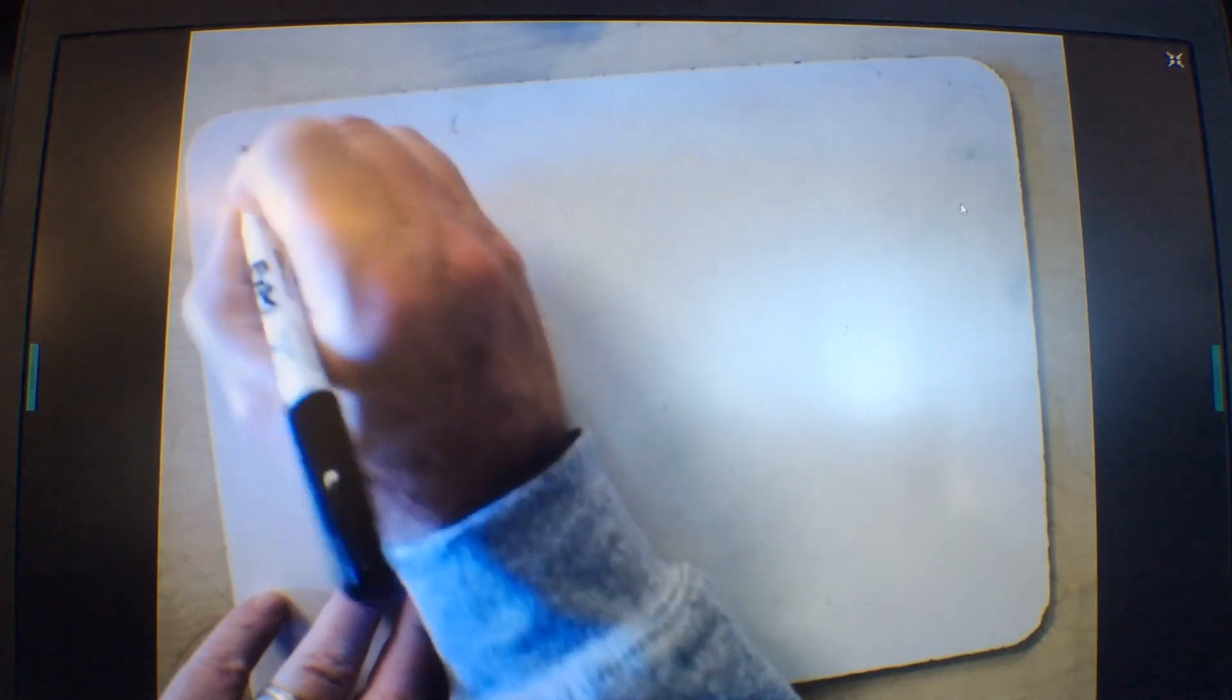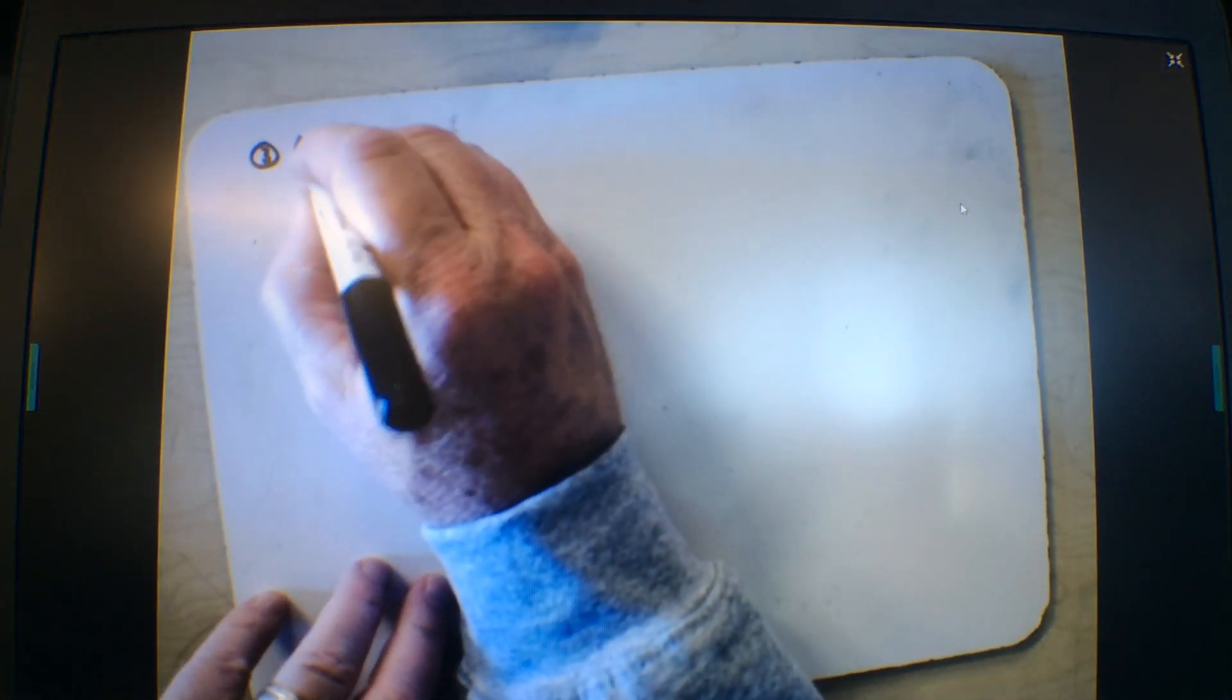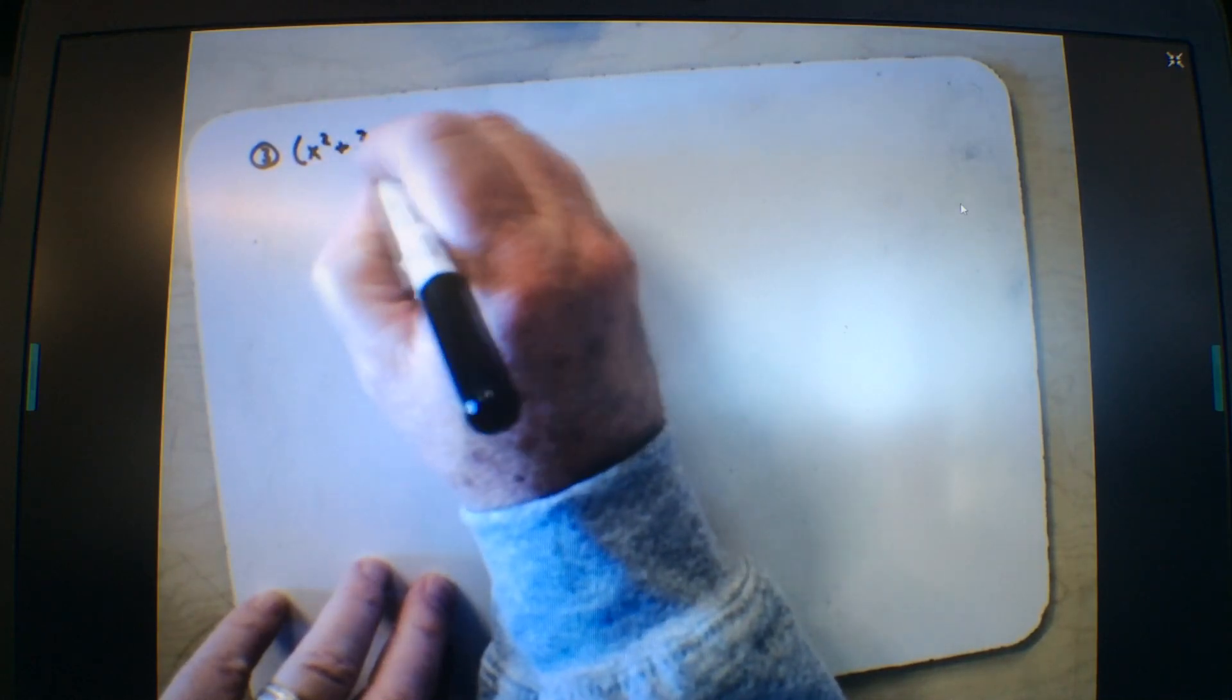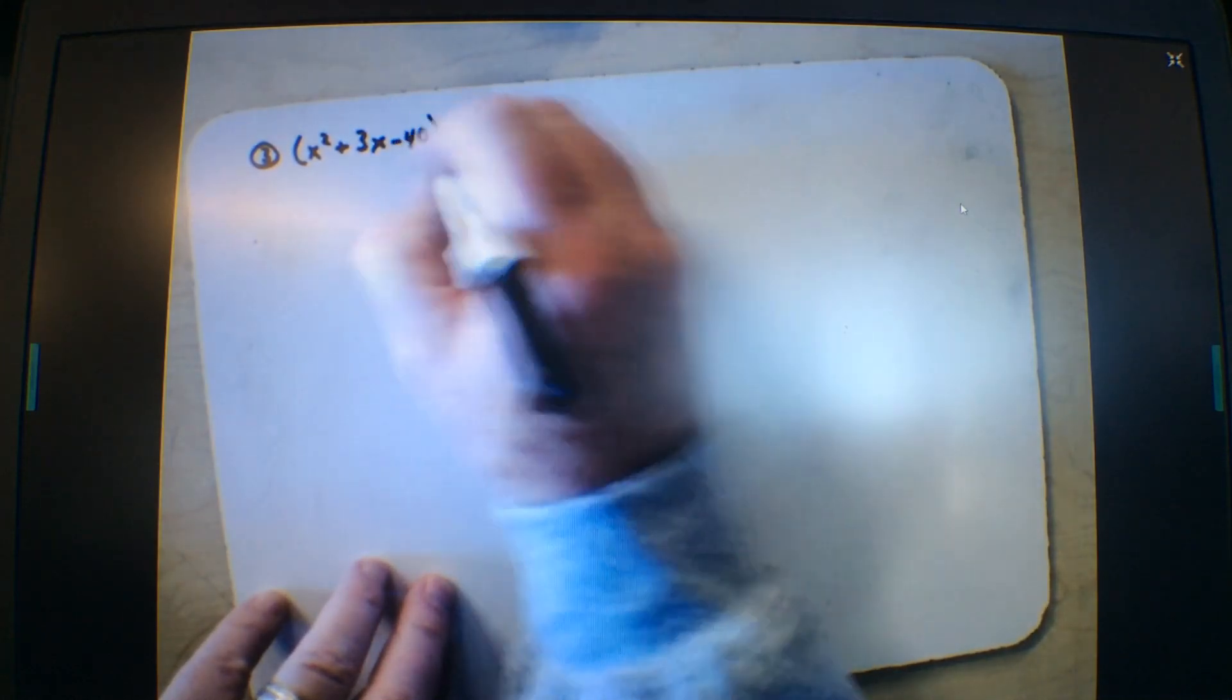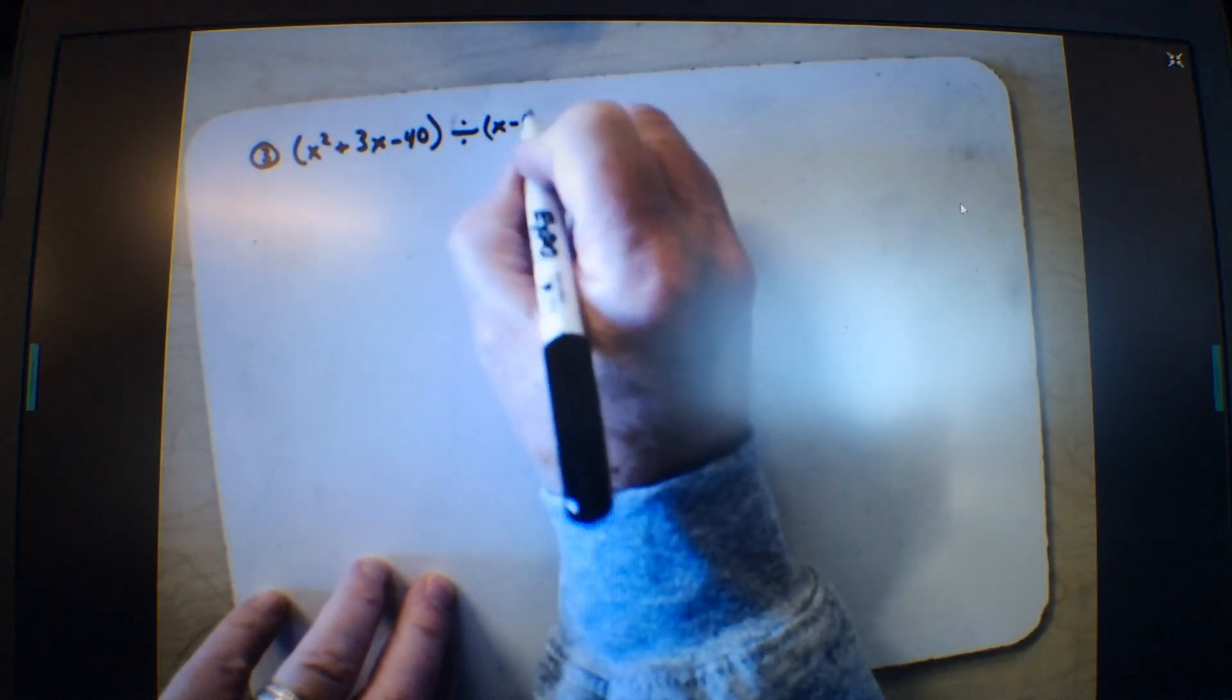I'm going to take an easy one first, and then we'll work. I'm going to work over here and then over here, because they take a long way down, or normally they do. So, I'm at number 3, and let's say that we have a problem like this. x squared plus 3x minus 40, divided by x minus 5.